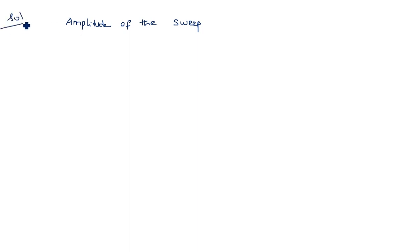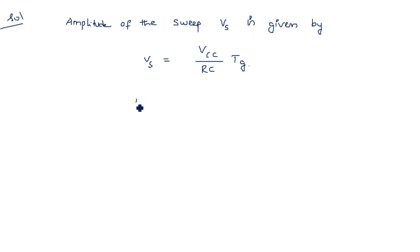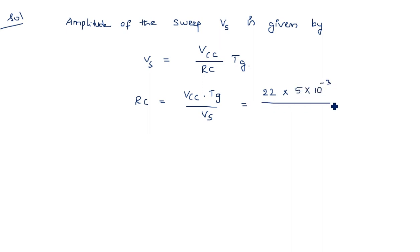The sweep amplitude Vs is given by Vs = VCC / RC × Tg. Rearranging, RC = VCC × Tg / Vs. Substituting the values: VCC is 22 volts, Tg is 5 milliseconds, and Vs is 15 volts. Simplifying this gives RC equal to 7.33 milliseconds, which is the product of resistance and capacitance.